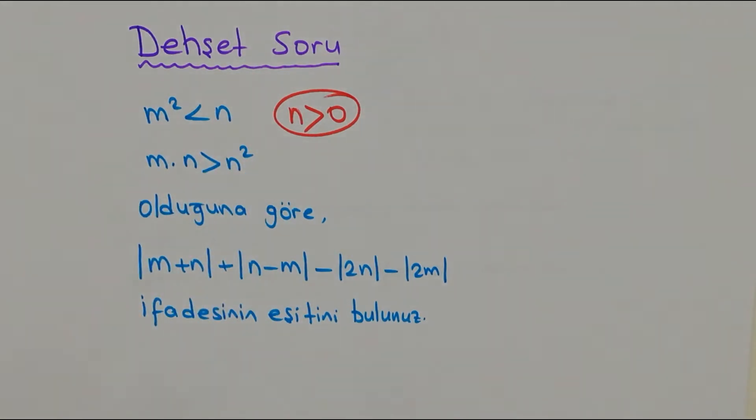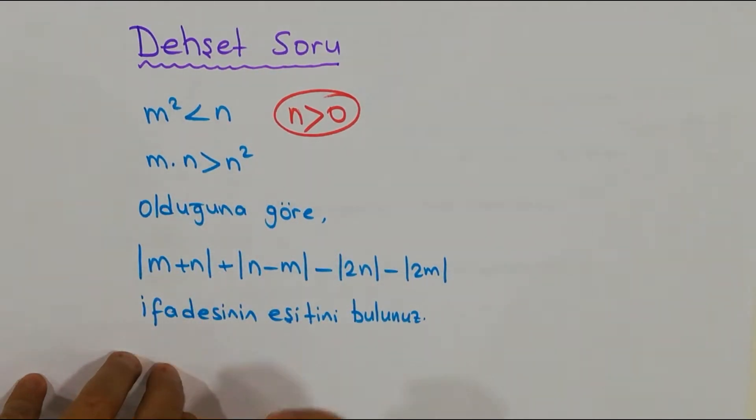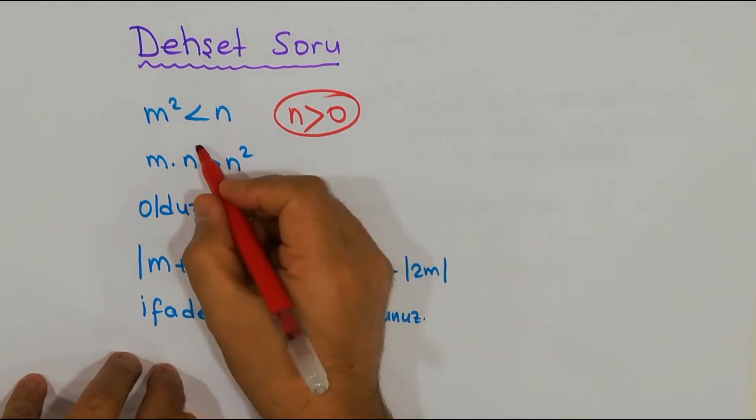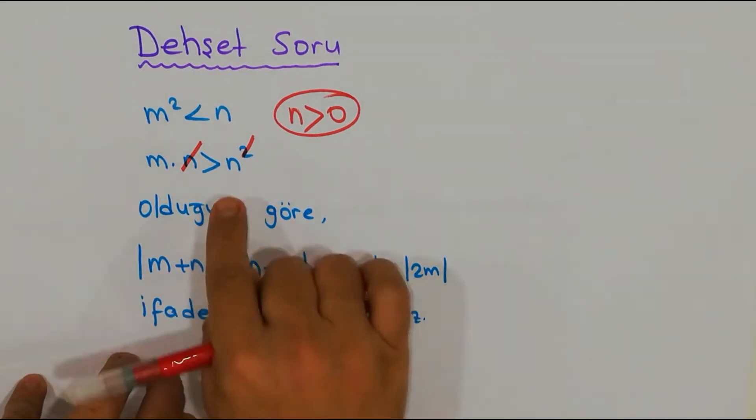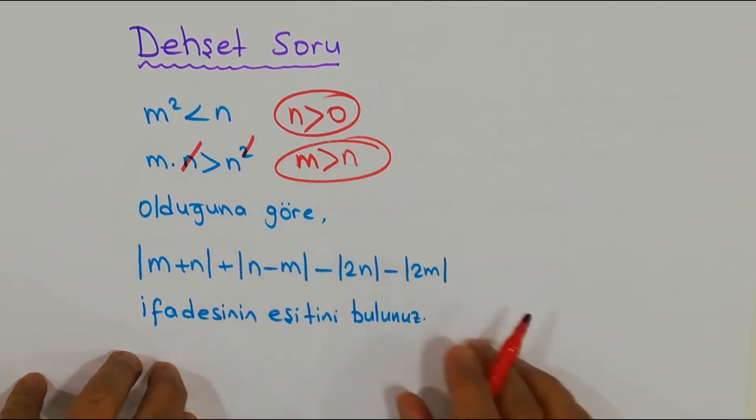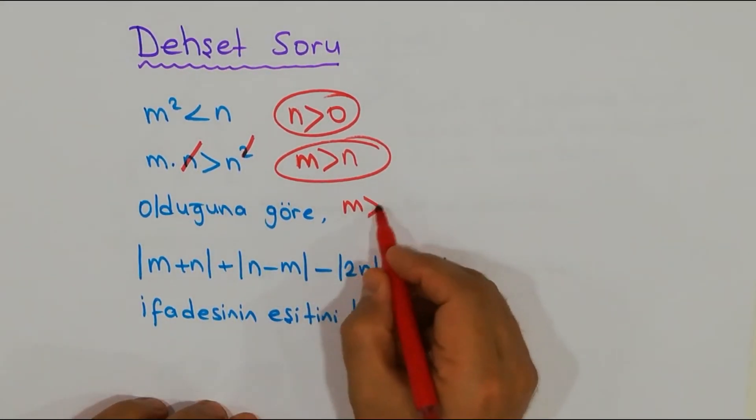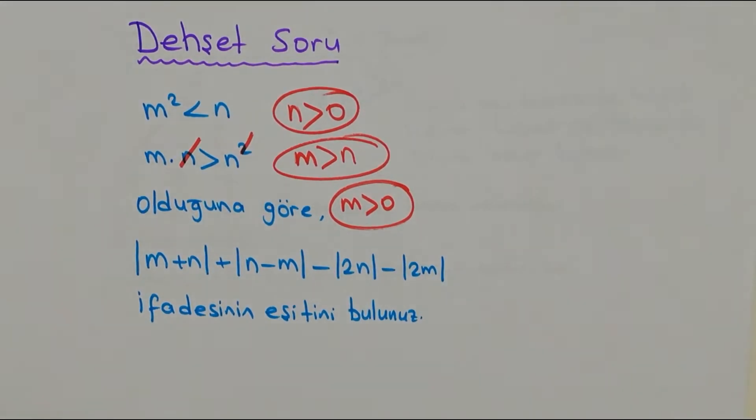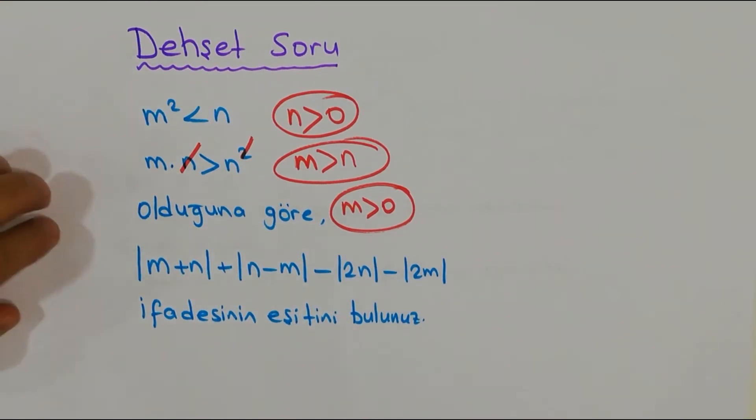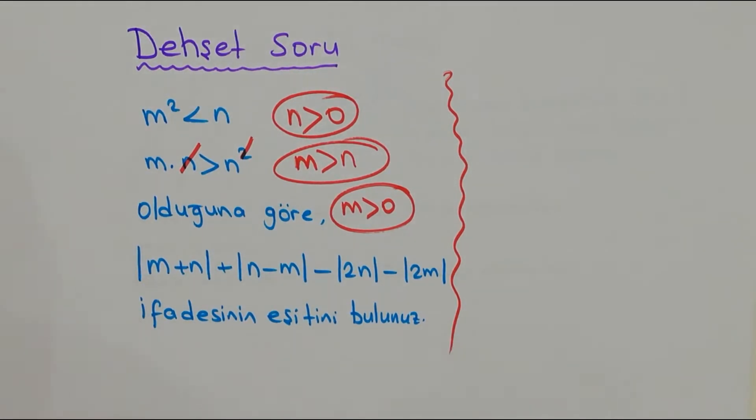Eşitsizliklerde geçen derslerimizin bir tanesini söylemiştik hatırlarsınız. Aynı sayıya biz bölsek ama pozitif bir sayıya bölsek eşitsizlik yön değiştirmiyordu değil mi? Kesinlikle evet. Ben şuradan n'lerden bir tanesini götürdüm, yani siz bunu aslında n çarpı n diye yazdınız, bir tane n gitti ve m n'den büyük oldu. Buraya kadar bir sıkıntımız var mı? Kesinlikle yok. Peki n pozitifse arkadaşlarım, değerli dostlarım, yakışıklılar, güzel insanlar, m sıfırdan da büyük mü? Evet.